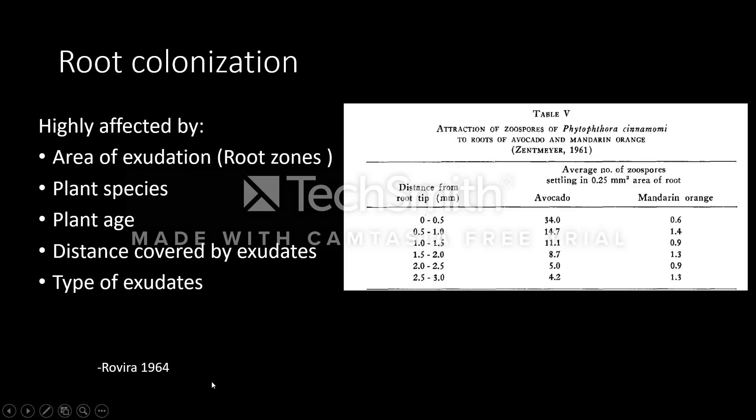There are several factors that affect microbial colonization of roots. These are the area of exudation or root zones, plant species, and plant age, the distance covered by the exudates, and the type of exudates produced by the plant.